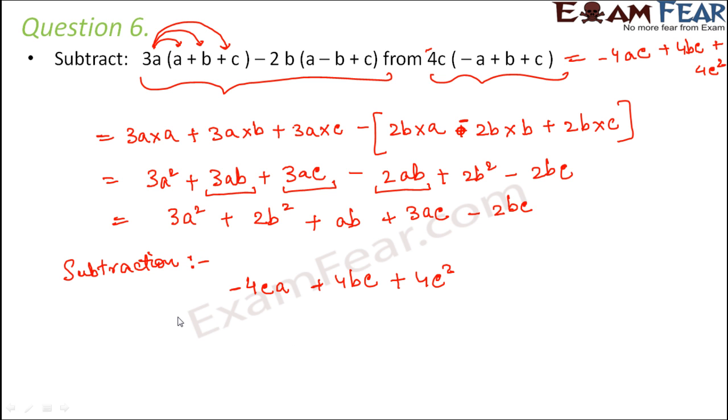So 3a². Where do we write 3a²? There is no such term with a², so we write it separately. Similarly, 2b², we write it separately. Then we have plus ab. Again, ab we do not have, so let us write ab also separately. Then you have plus 3ac. 3ac is same as ca, so let us write 3ac below this. Then you have minus 2bc. So bc will be below bc because they are like terms.